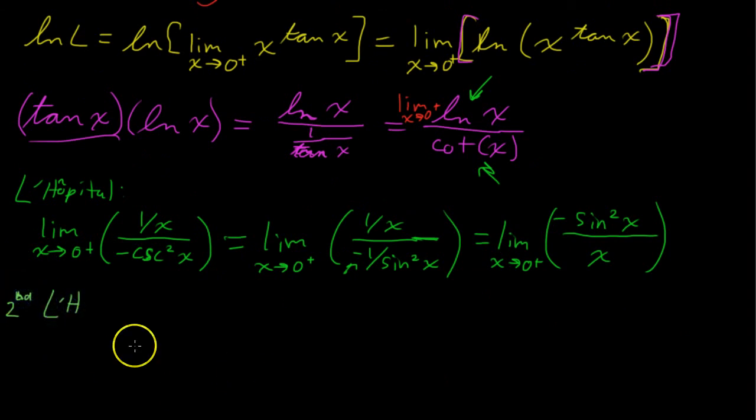So that is the limit as x approaches 0 from the right. And the derivative of the numerator is negative 2 sine of x times cosine of x. Remember the chain rule there. And over 1, the derivative of x is just 1.